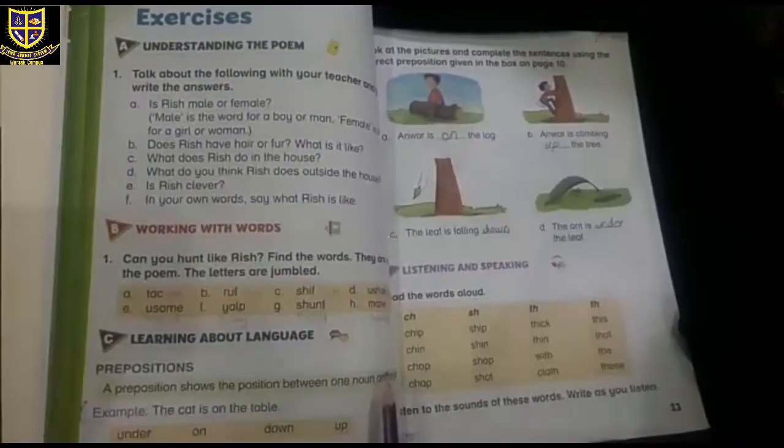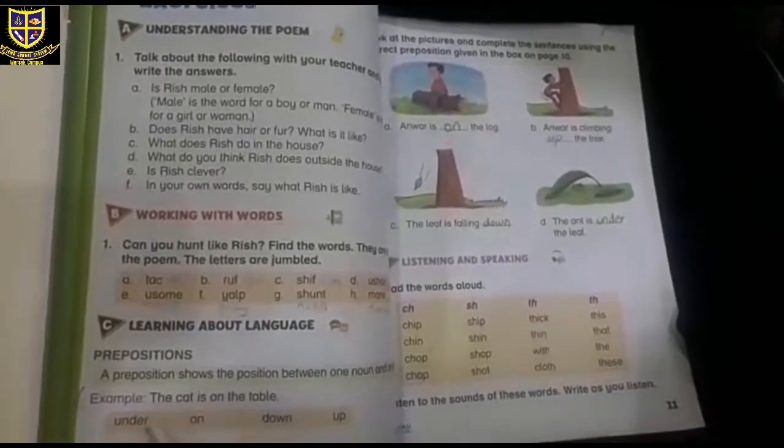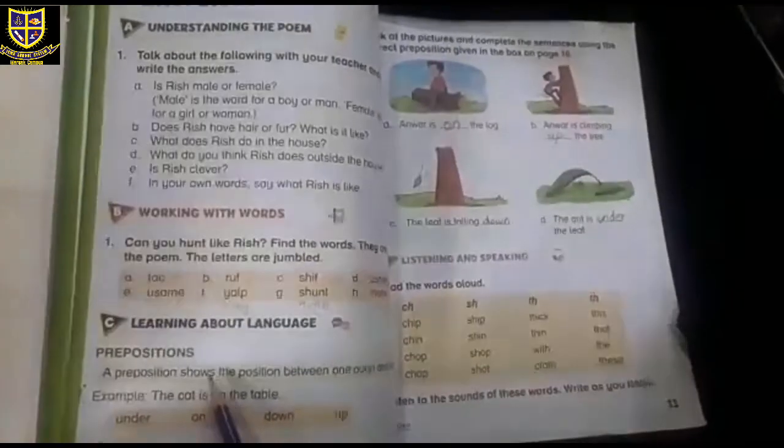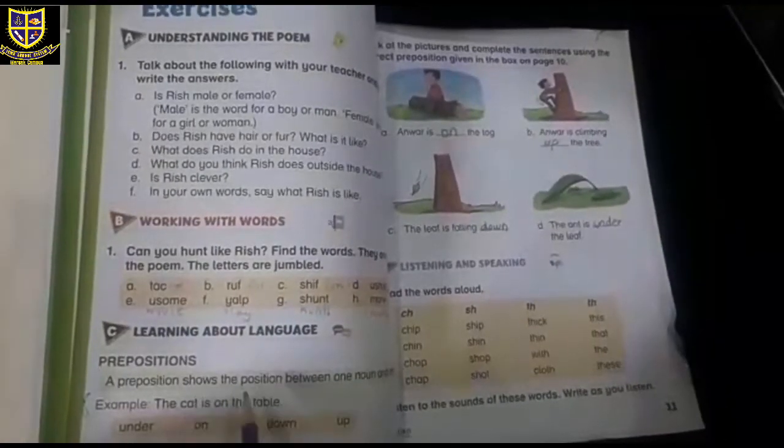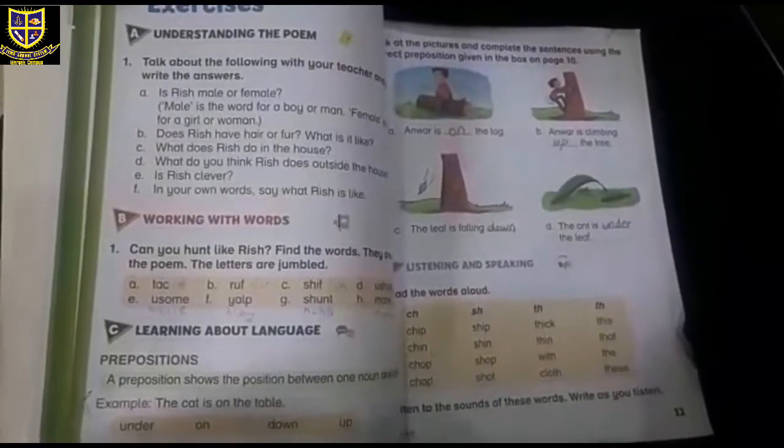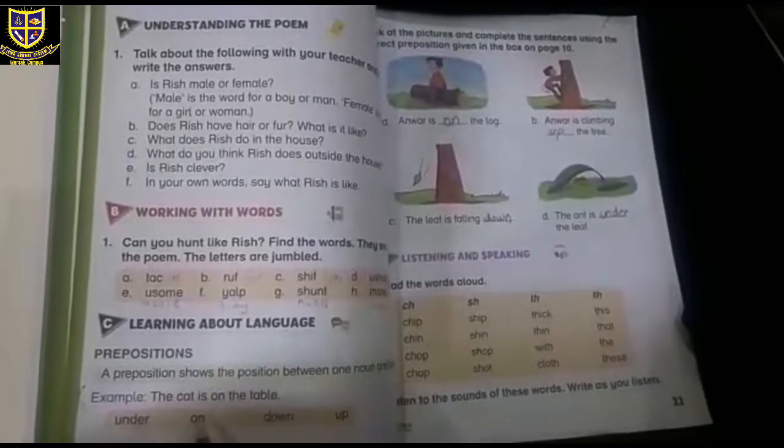For example, the cat is on the table. Cat is a noun. Noun is the name of a person, place, or thing, as you all know. Cat is a noun, table is a noun. On tells us the cat is on the table.